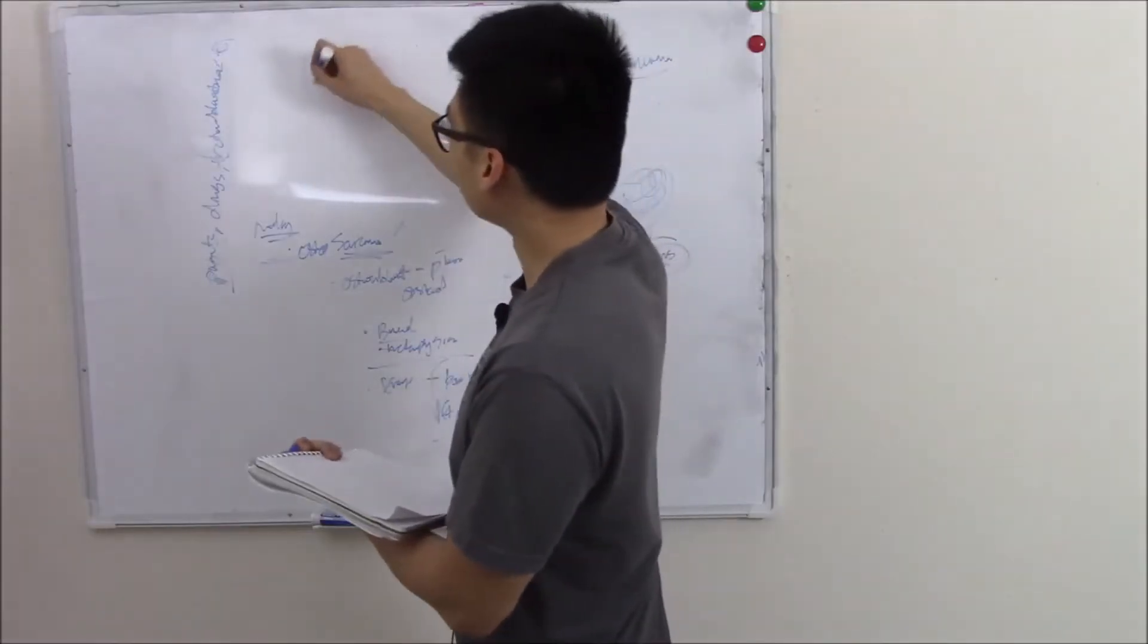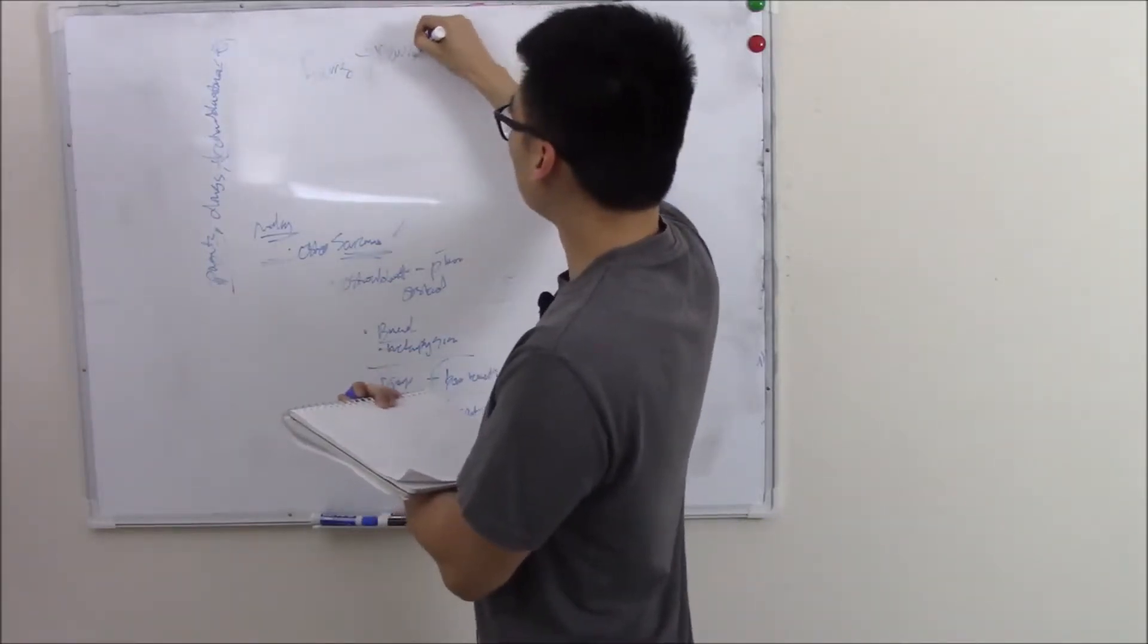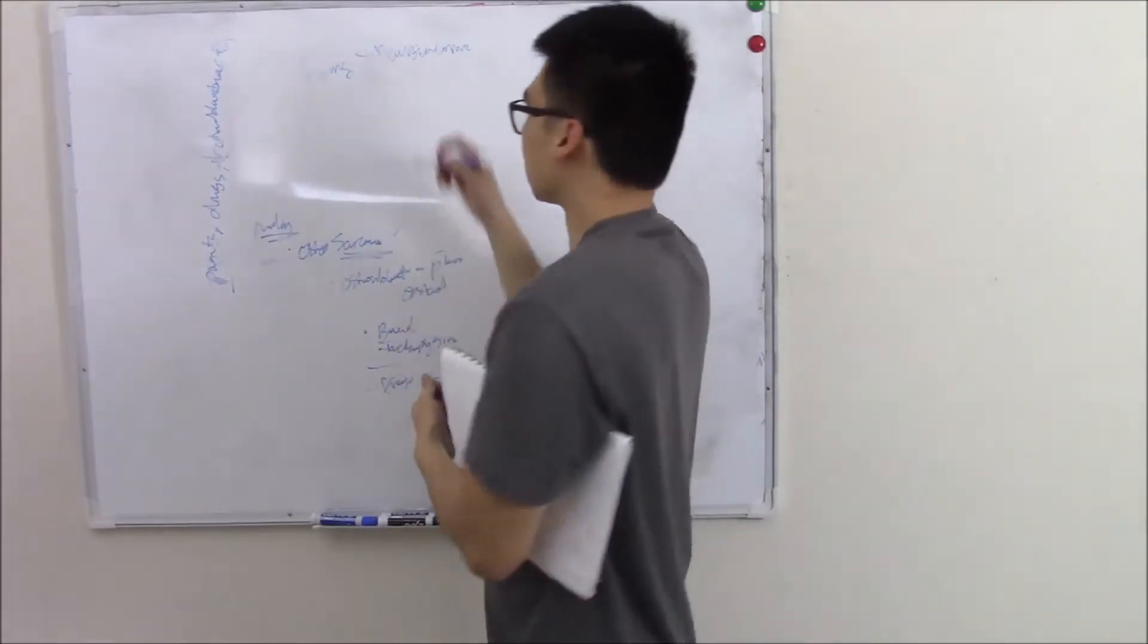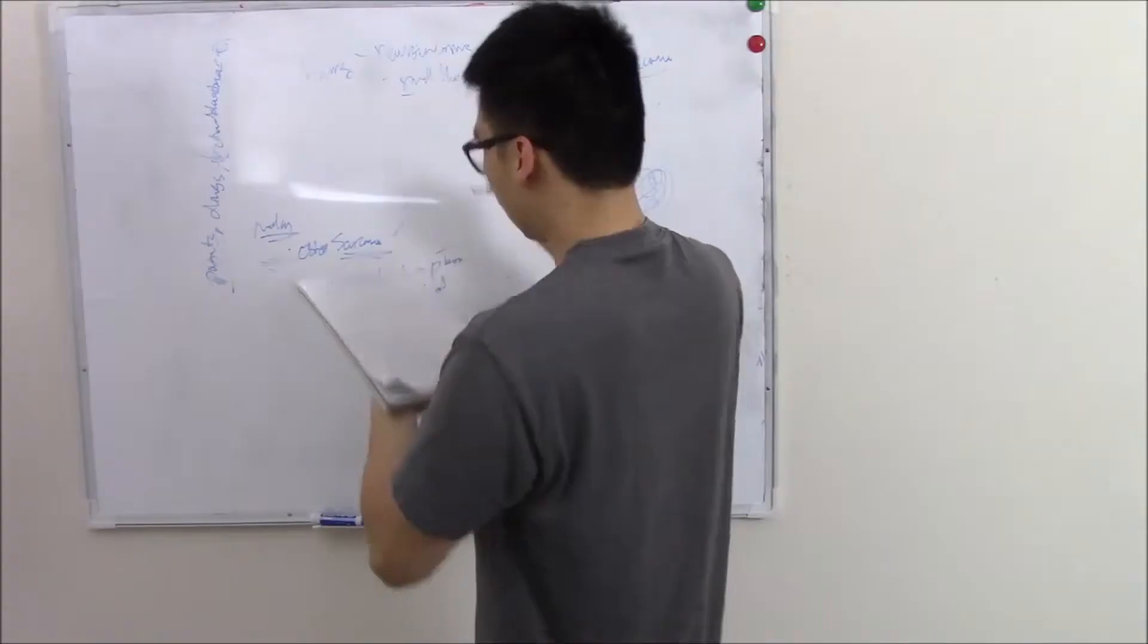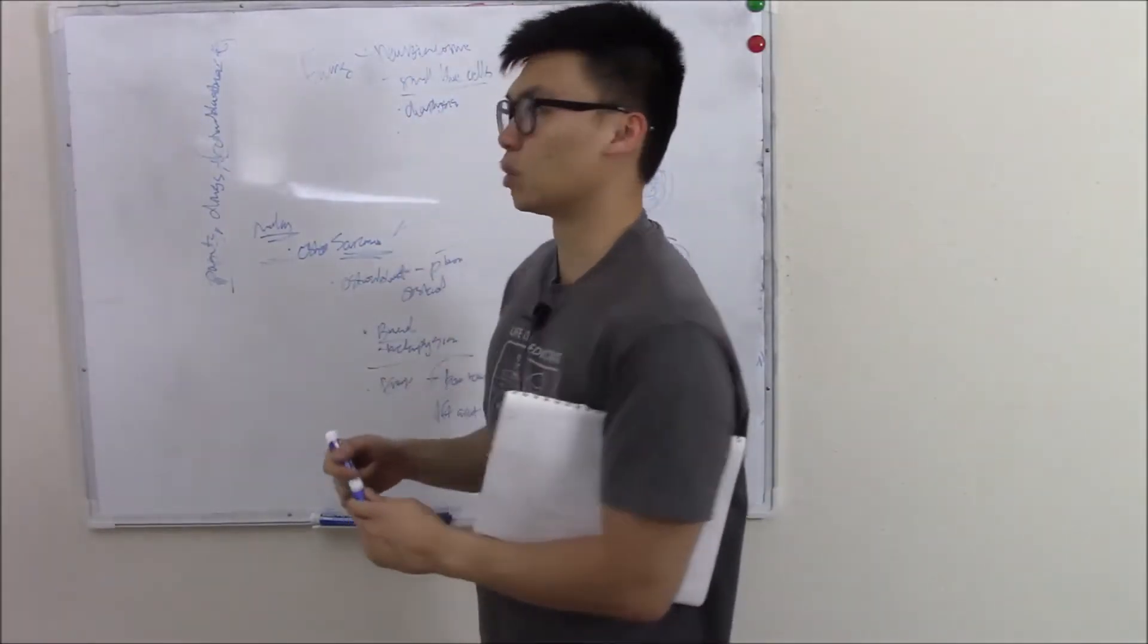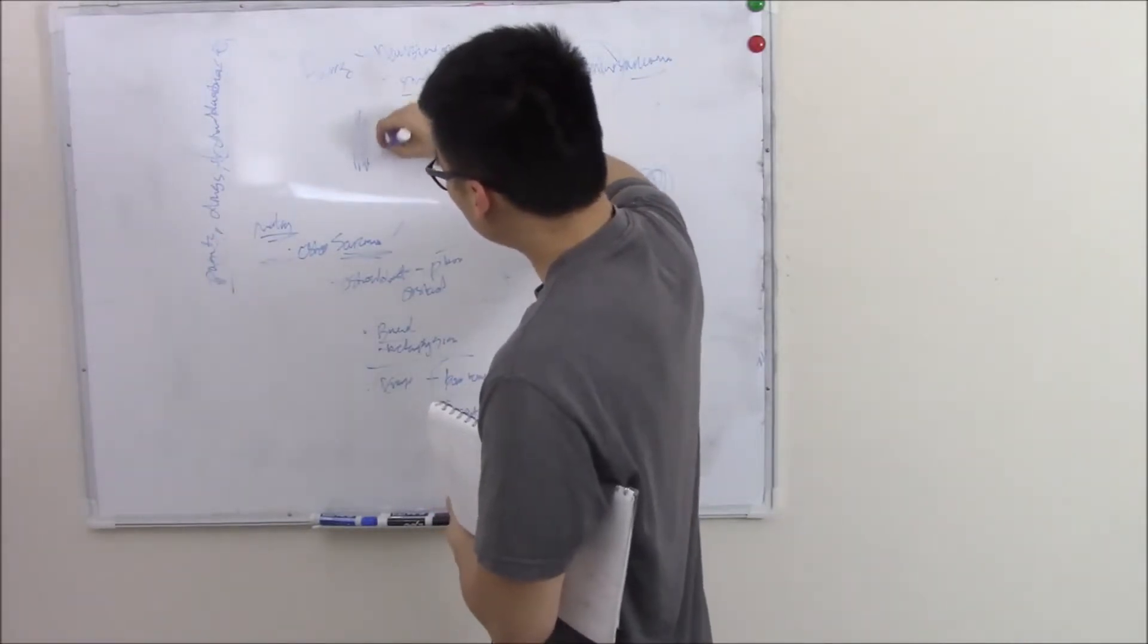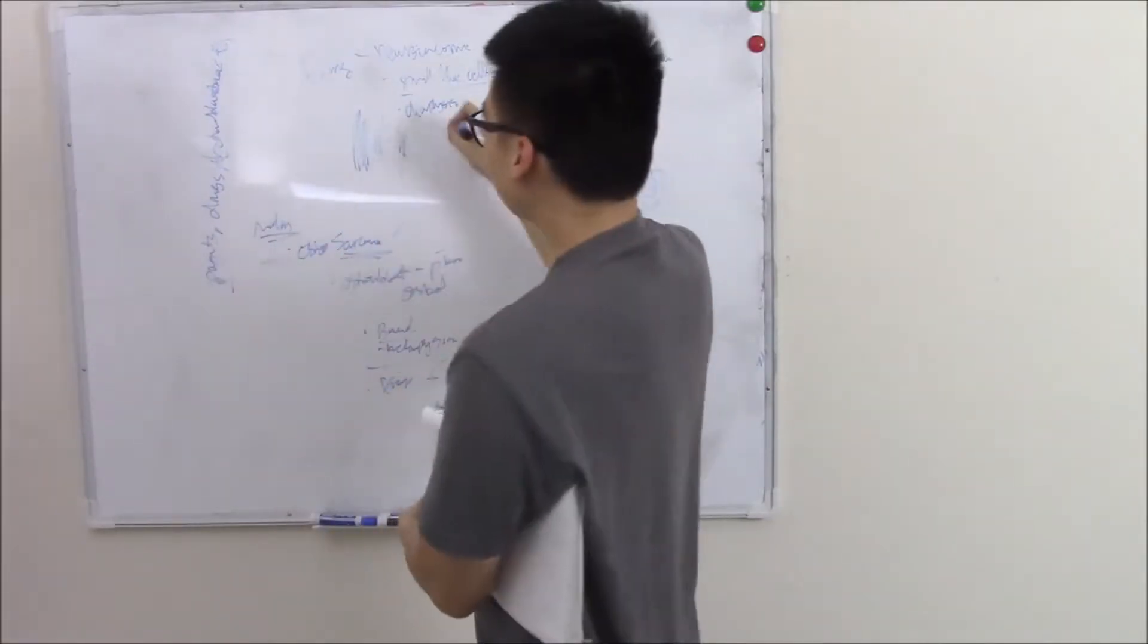Last but not least, Ewing sarcoma. So Ewing comes from neuroendocrine cells. And all neuroendocrine cells kind of look similar. They look very small, very blue. So these are just called small blue cells. And it loves your diaphysis. And the cancer causes your periosteum to really react towards it. It causes your periosteum to kind of grow in layers. And it looks kind of like an onion skin. So we call it onion skinning.